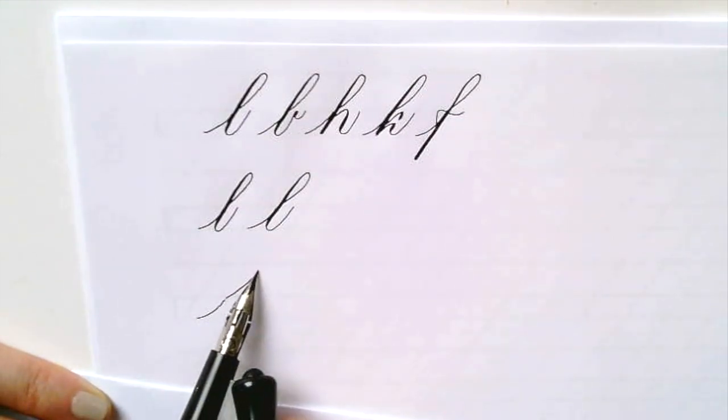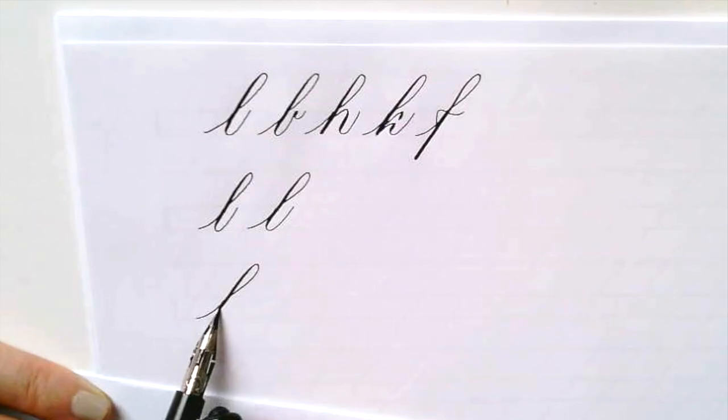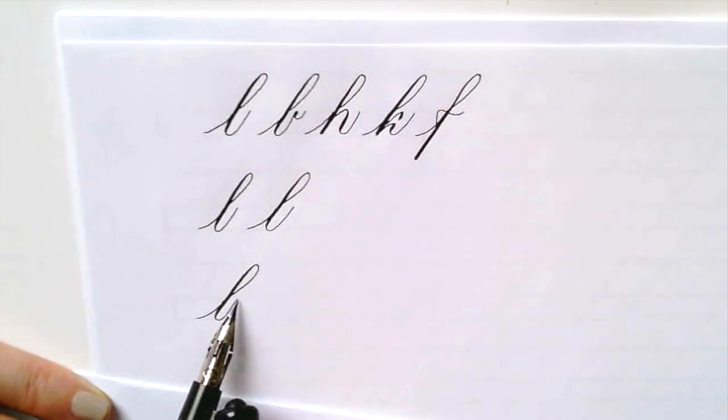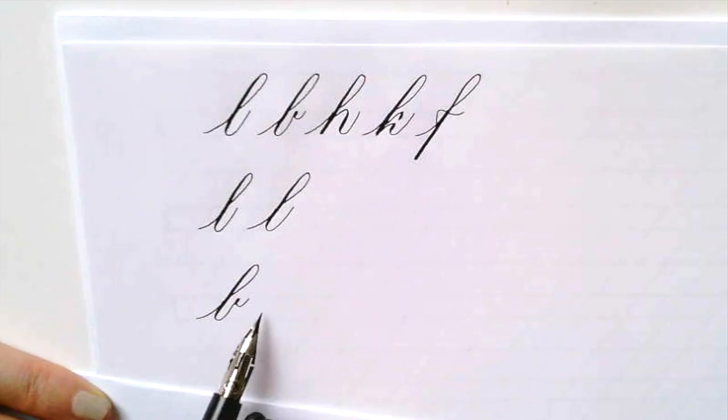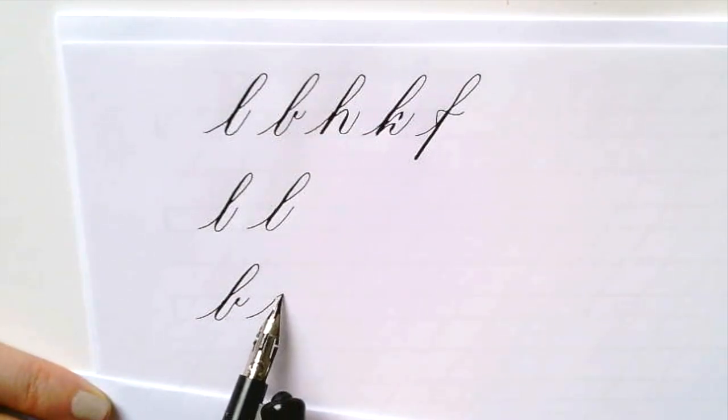B, very similar. In-stroke, loop up, heavy down, release, come back up and then add the little half underturn or third underturn that we know from the V and the W already.